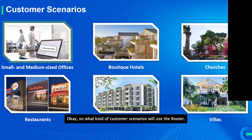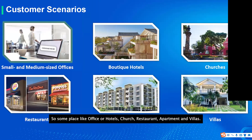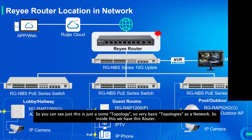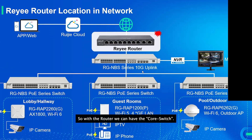What kind of customer scenarios use routers? Places like offices, hotels, churches, restaurants, apartments, and villas — basically everywhere that has internet will require a router. You can see these are some basic network topologies where routers fit in.